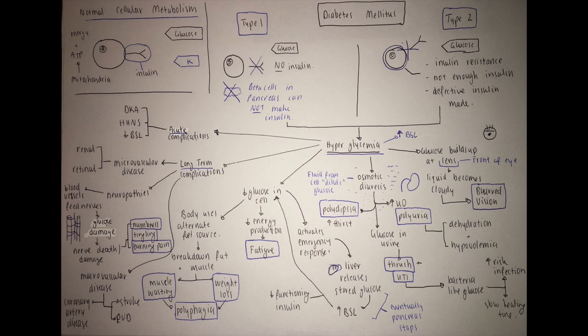Acute complications of hyperglycemia include DKA, which I'll go through in another video, HHNS, and low blood sugar level. Once we start treating high BSL, we're at risk of a low BSL.